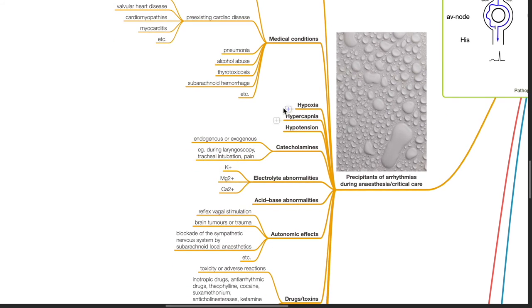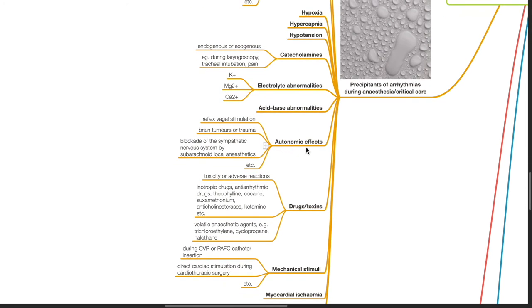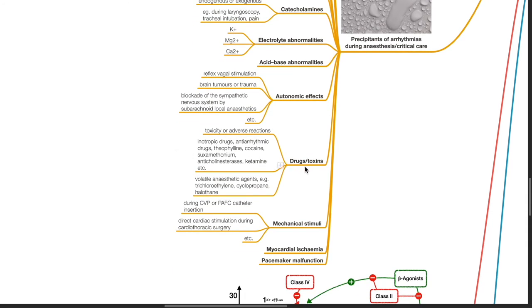Hypoxia, hypercapnia, hypotension, catecholamines endogenous or exogenous, electrolyte abnormalities such as that of potassium, magnesium, and calcium, acid-base abnormalities, autonomic effects such as reflex vagal stimulation, brain tumors or trauma, blockade of the sympathetic nervous system by subarachnoid local anesthetics. Drugs or toxins such as inotropic drugs, antiarrhythmic drugs, theophylline, cocaine, suxamethonium, anticholinesterase, ketamine, volatile anesthetic agents.